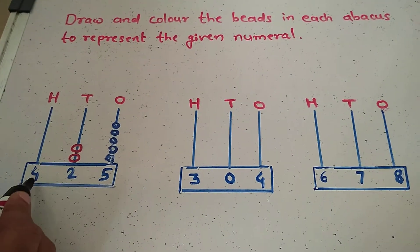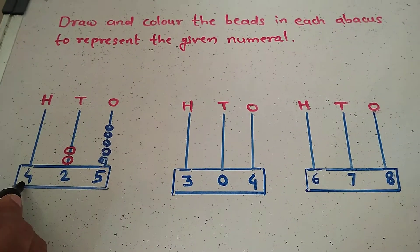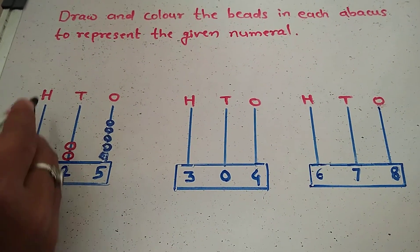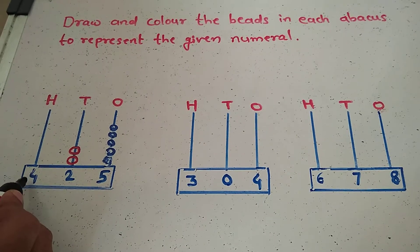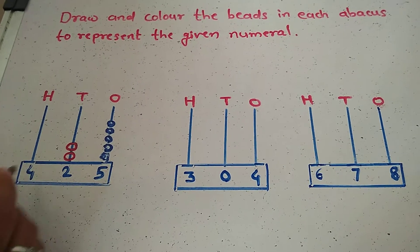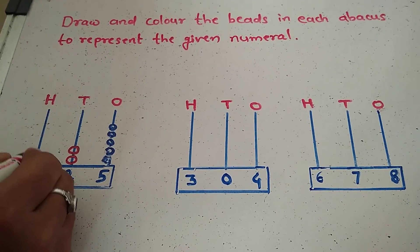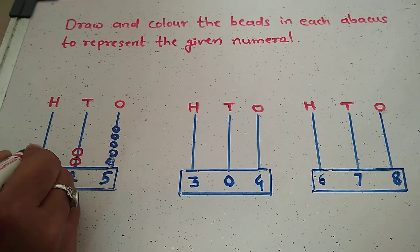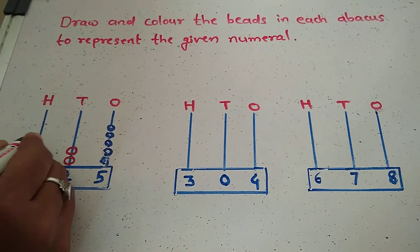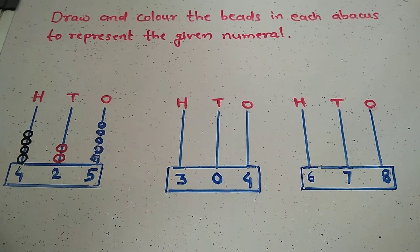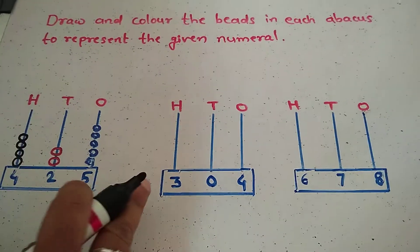Next, hundreds place. Which number is in the hundreds place? Four. How many beads are drawn there? Four beads: one, two, three, four. Same. We have to do the next abacus.